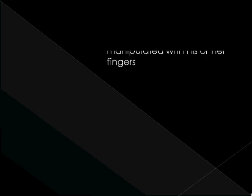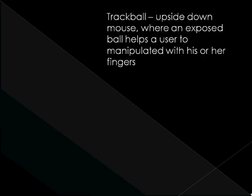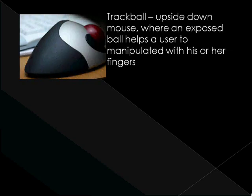Trackball mouse. The trackball is sometimes called an upside-down mouse. While a mouse employs a rolling ball on its underside, a trackball uses an exposed ball that the user manipulates with his or her fingers. Unlike a traditional mouse, a trackball does not require a horizontal pad on which to move. They are a good choice for those with limited desk space, large monitors, or poor grasping ability.